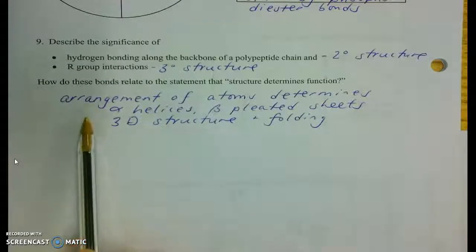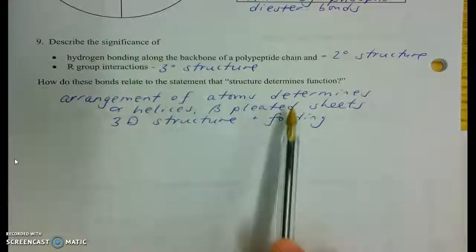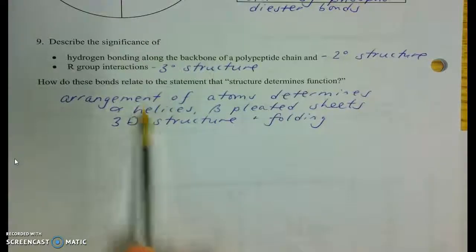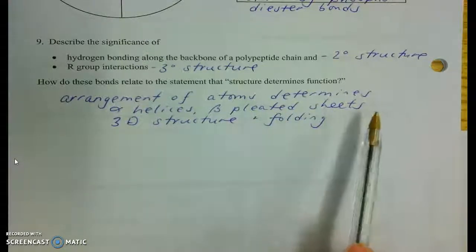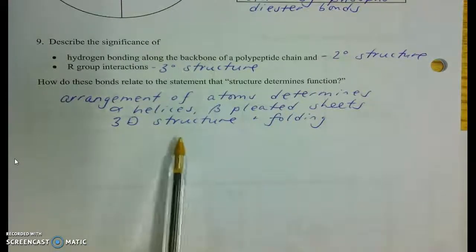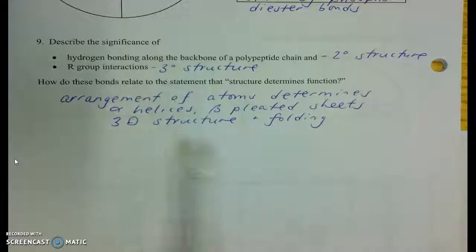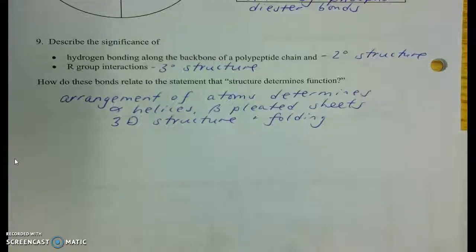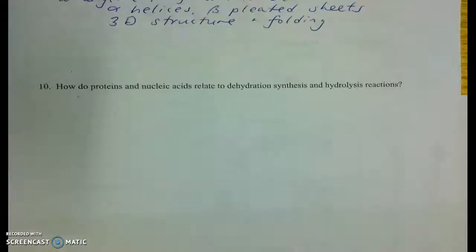And that's going to determine if it has the alpha helices, the beta-plated sheet, those twists and turns, those accordion folds. And then, even more complex three-dimensional structure and folding. That's why we even care about those four levels of structure.